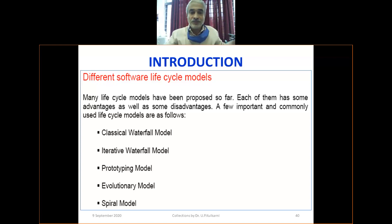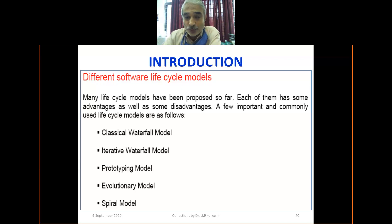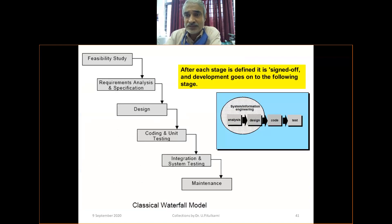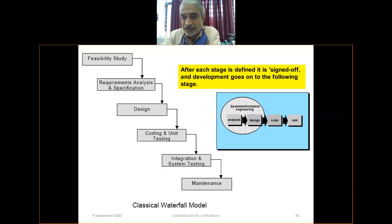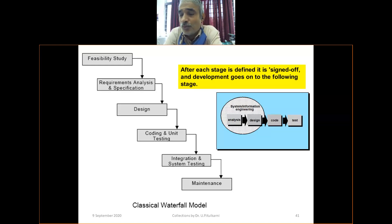The models we discuss include the classical waterfall model, evolutionary development, formal system development, reuse-based development, iterative and prototyping models, and the evolutionary spiral model. We will look at the features of all these models. Starting with the waterfall model: its stages include feasibility study, requirement analysis and specification, design, coding and unit testing, integration and system testing, and maintenance.